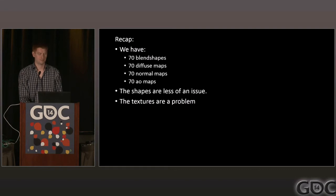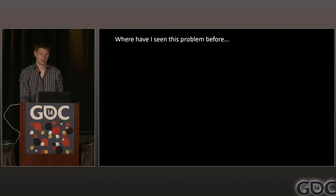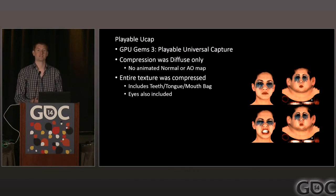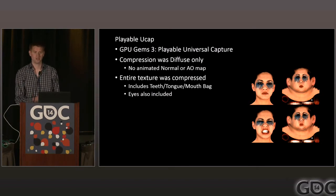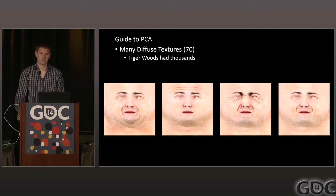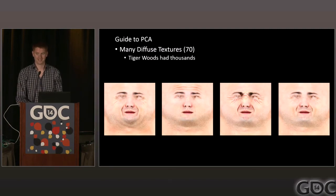Compressing the shapes is a kind of well-solved problem; compressing the textures we don't really have a solution for. This is very similar to the Universal Capture problem I worked on — every single frame of animation had a unique diffuse map that needed compression. Tiger Woods had about 5,600 unique frames; we only have about 70, so it should compress pretty well. We had major compression issues with Tiger Woods, and looking back I've realized all the things we did wrong, but we should be able to compress these 70 textures pretty well.